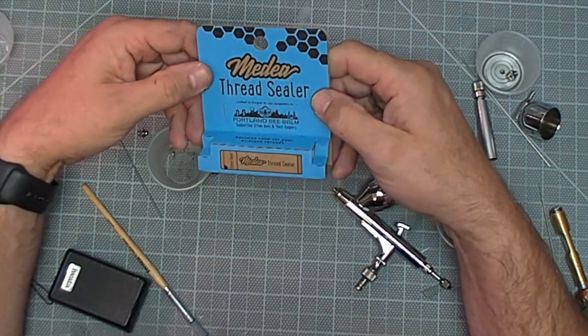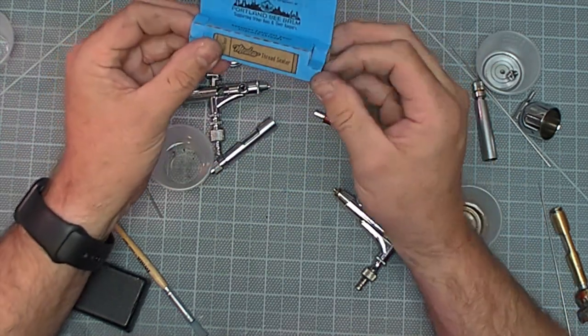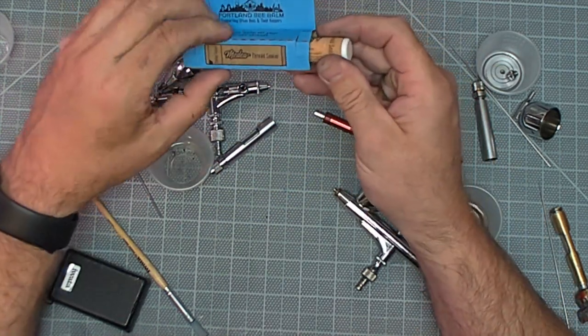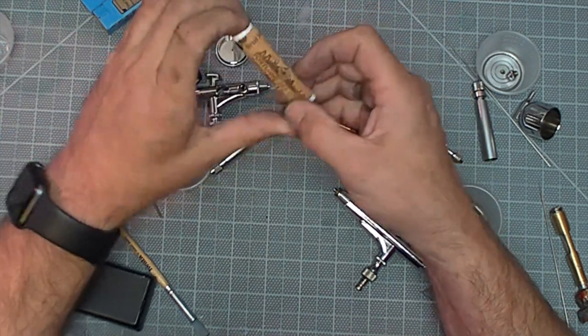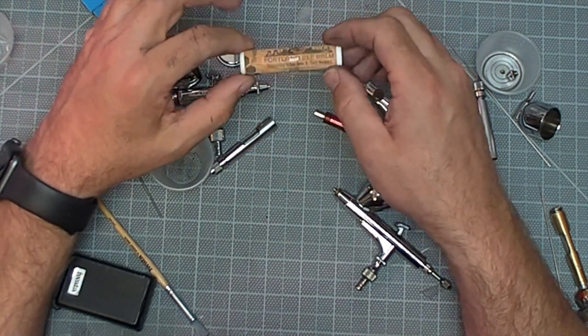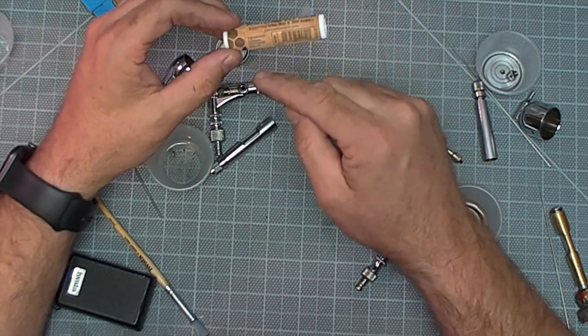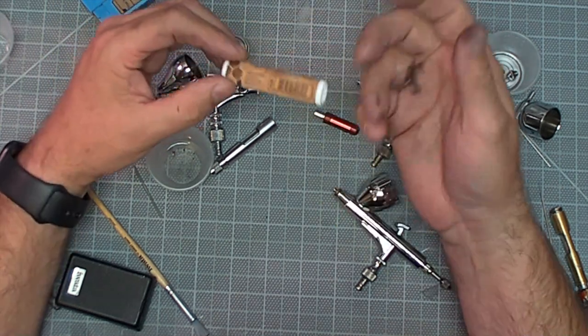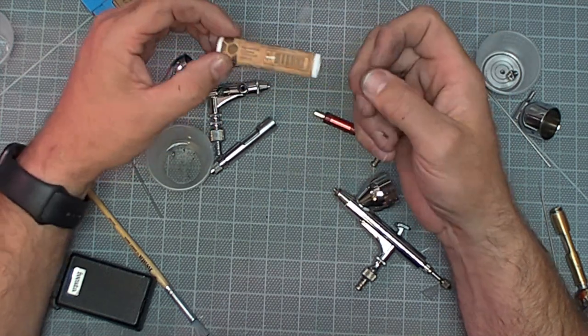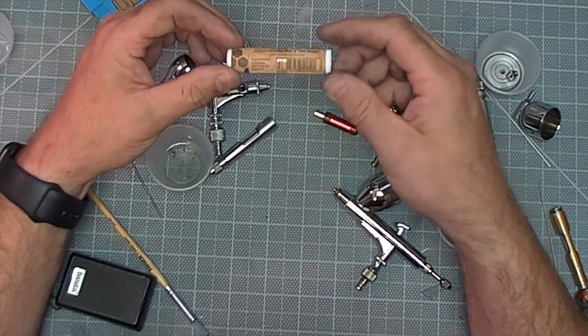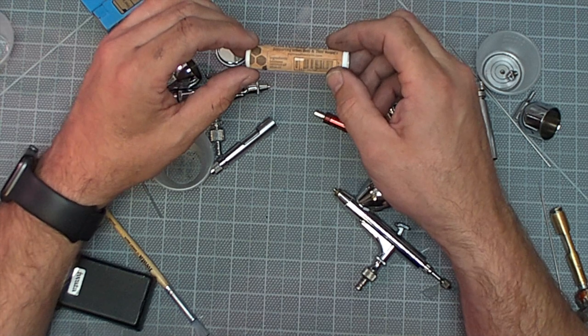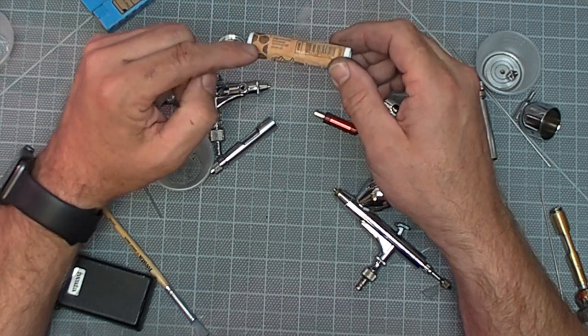What Iwata has done here - Madea, which is a branch of Iwata here in the US - they've made this nice Portland bee balm, which is basically just beeswax, but it's a really good consistency. It's not too watery, not too hard. I've gotten some before where you have to melt it and warm it up. This just works great.